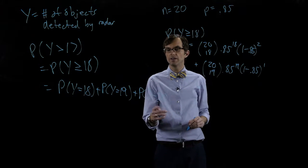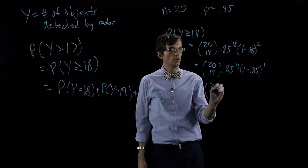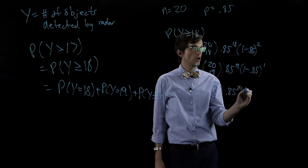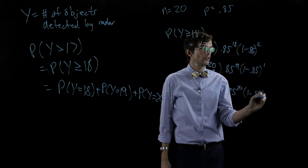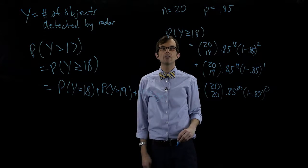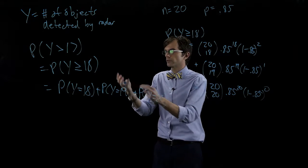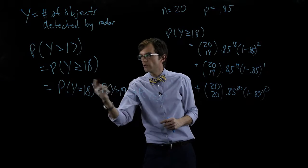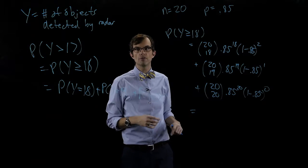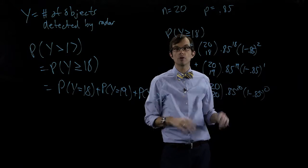The probability that all twenty out of twenty objects are detected: twenty choose twenty, times point eight-five to the twentieth, times one minus point eight-five to the zero. The hard part is translating the problem into a random variable, picking out what we need, and determining that it's a binomial distribution in the first place. Once we have that, the rest is pretty straightforward arithmetic.